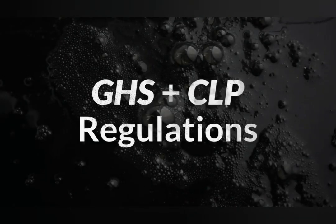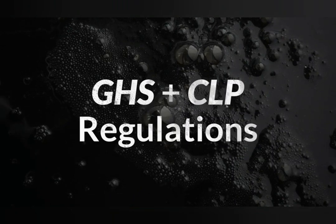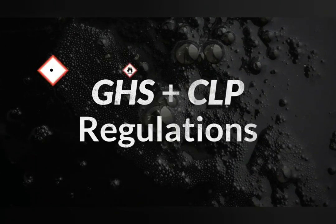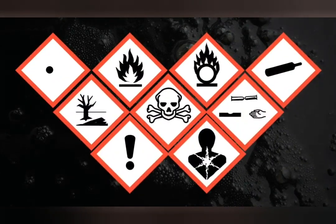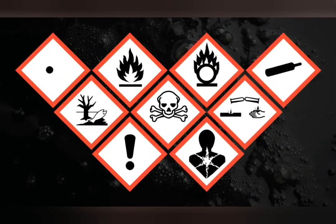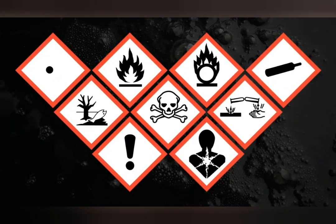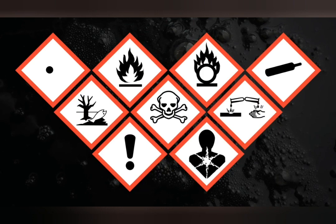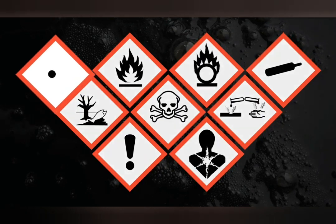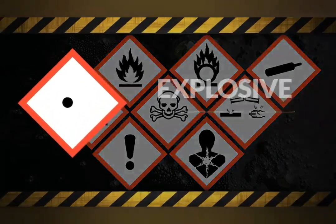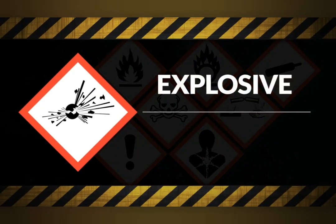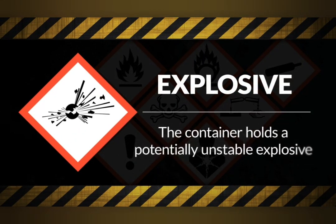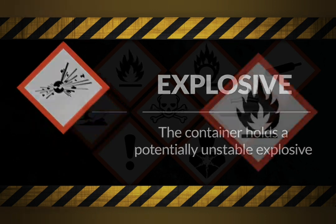The GHS and CLP regulations use various symbols to identify the hazards that are posed by different chemicals. The first is explosive, which confirms the container holds a potentially unstable explosive.